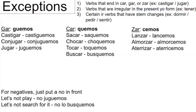Here are some exceptions. The basic exceptions are verbs ending in -car, -gar, or -zar, which will be different — I'll go into that coming up. Also, verbs that are irregular in the present tense yo form — I'll go into that too. And subsequently, verbs that have stem changes in IR verbs.